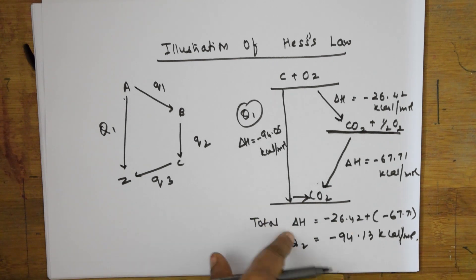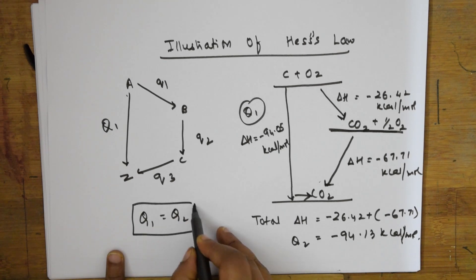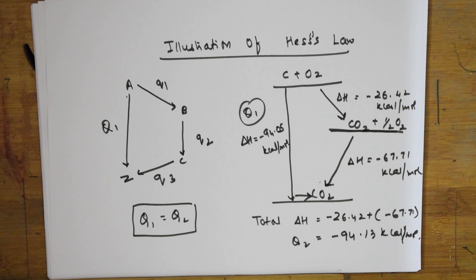Hence, Hess's Law has been tested experimentally and is proven to be true. Q1 is almost equal to Q2. This proves Hess's Law. In the exam, if they ask you, you need to write it this way. You can write that experimentally, Hess's Law has been proven with this example.